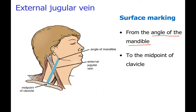The internal jugular vein follows a line from the midpoint between the tip of the mastoid process and the angle of the mandible down to the sternoclavicular joint, overlapping the sternocleidomastoid muscle. The two veins — external and internal jugular — cross each other, one superficial and the other deep, forming an X. This relationship is important to remember.